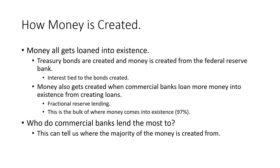In a healthy system, the majority of the money gets created from loans. In an unhealthy system that's about to die, the majority of the money gets created from the top — where a country gets into a late debt cycle and needs to create money to cover bond interest payments, leading to basically a hyperinflation. I'm not saying we're necessarily in a hyperinflation yet, but we could be subject to one. That's how money is created — those two ways: government spending via treasury bonds and commercial bank lending.